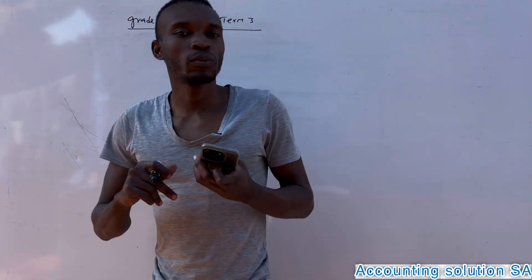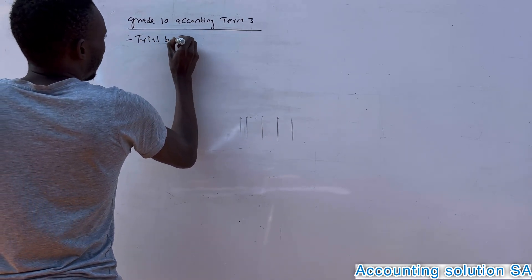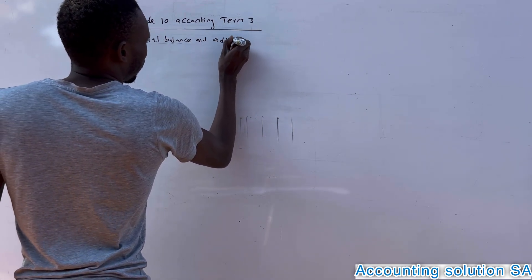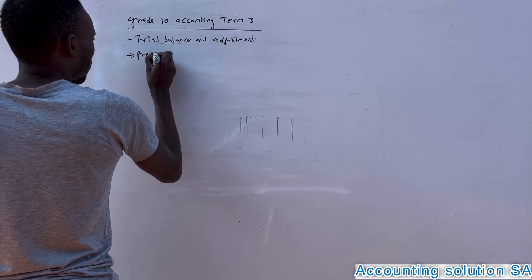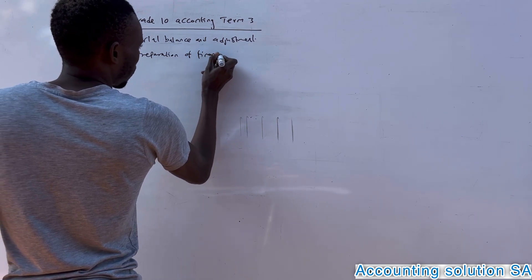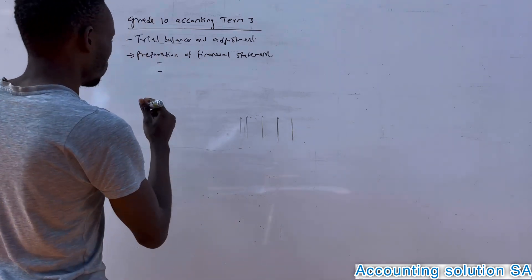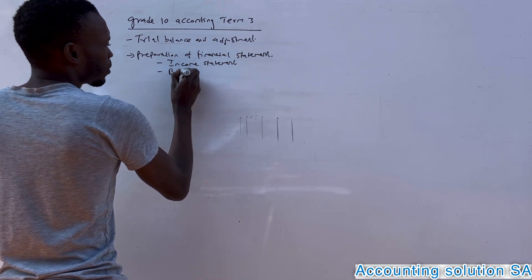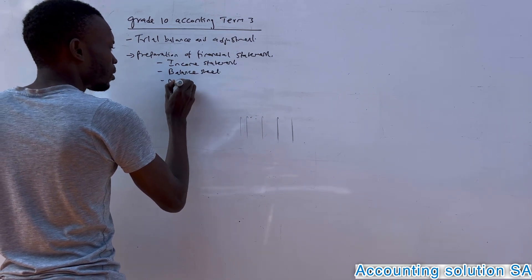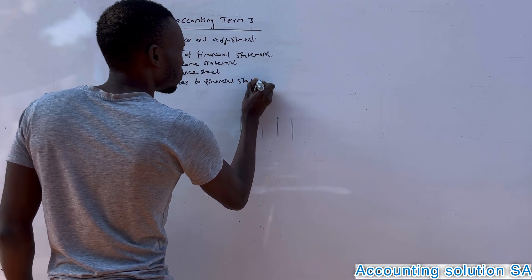In this video we are going to lay down the chapters you are going to focus on for term three. Number one is what we call a trial balance and adjustment. Topic number two is the preparation of financial statements, which includes: number one, income statement; number two, balance sheet; and the last one is notes to financial statements.